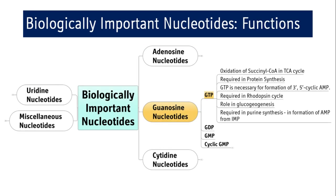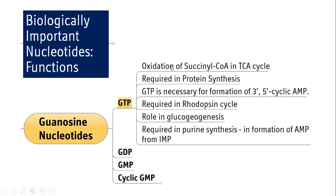Coming to guanosine nucleotides — GTP, GDP, GMP, and cyclic GMP. GTP has a role in oxidation of succinyl-CoA in the TCA cycle and is required in protein synthesis. GTP is necessary for formation of 3',5'-cyclic AMP, and there is an important relationship between ATP and GTP. It is required in the rhodopsin cycle. It also has a role in gluconeogenesis and in purine synthesis, specifically in formation of AMP from inosine monophosphate (IMP).